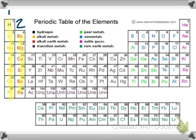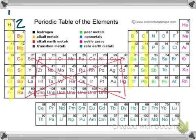We continue in that sort of pattern, but do not forget that we need to skip over all of these transition metals. We want to make sure that we do not include these when we're talking about valence electrons. So these will have 3, 4, 5, 6, 7, and 8.